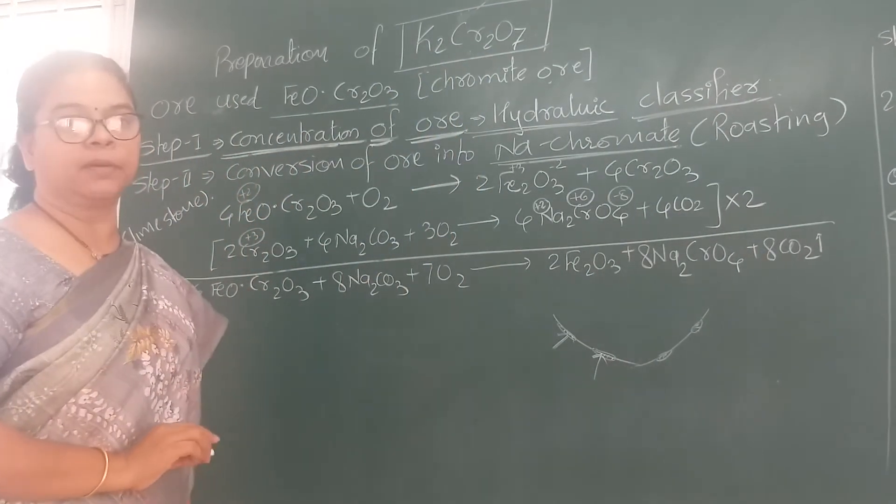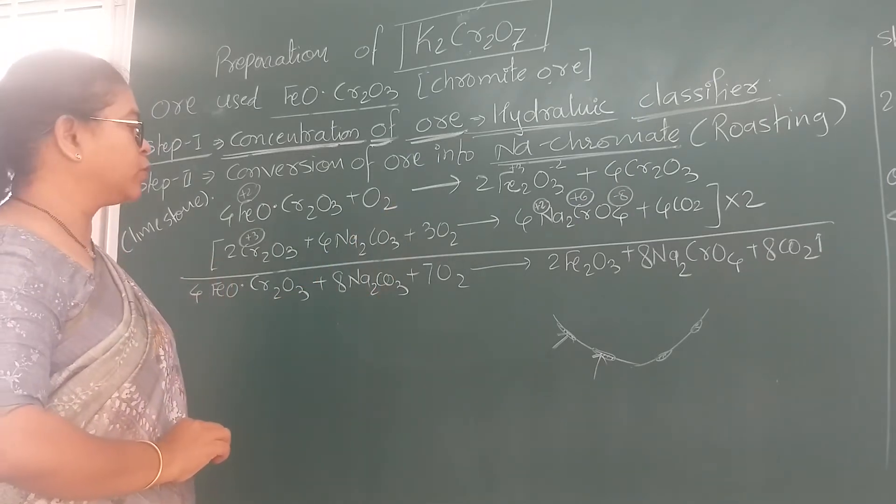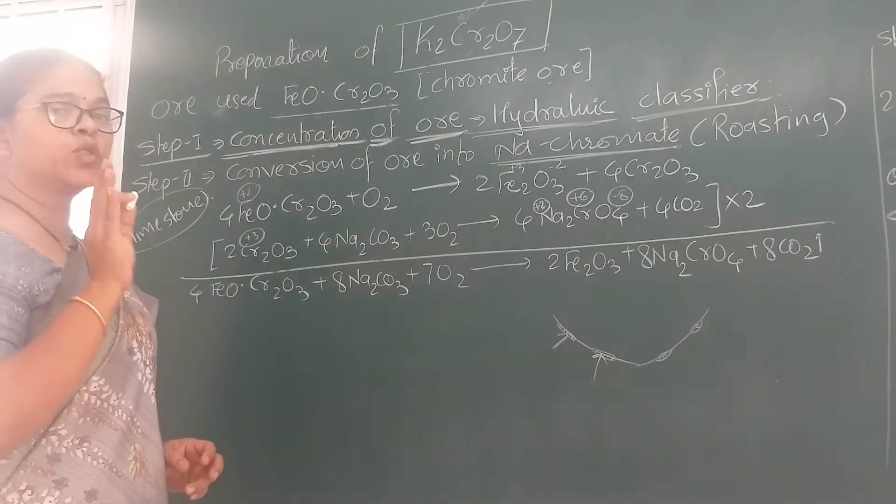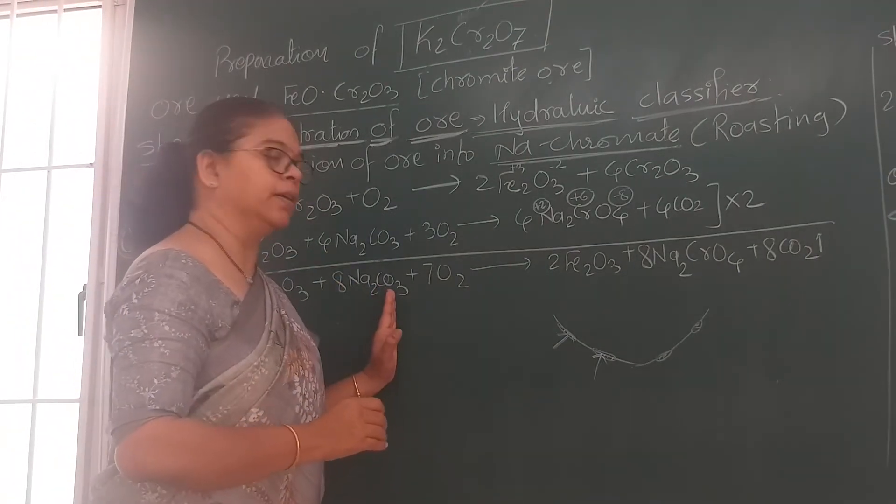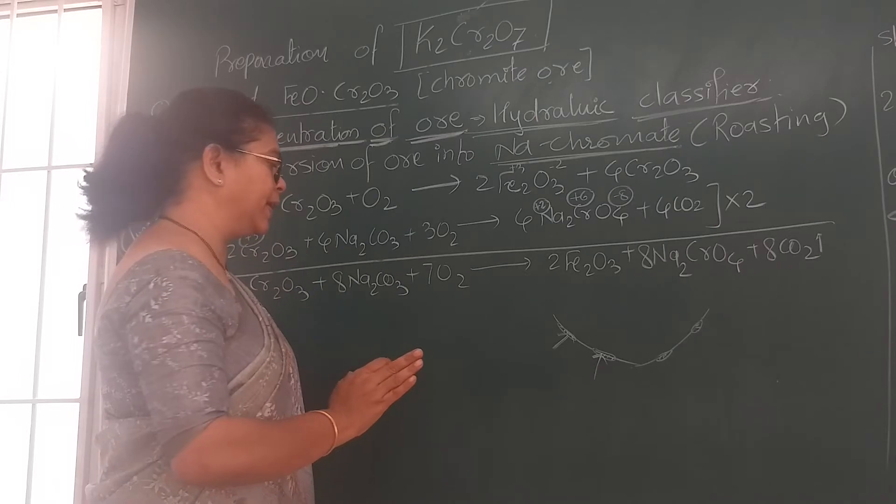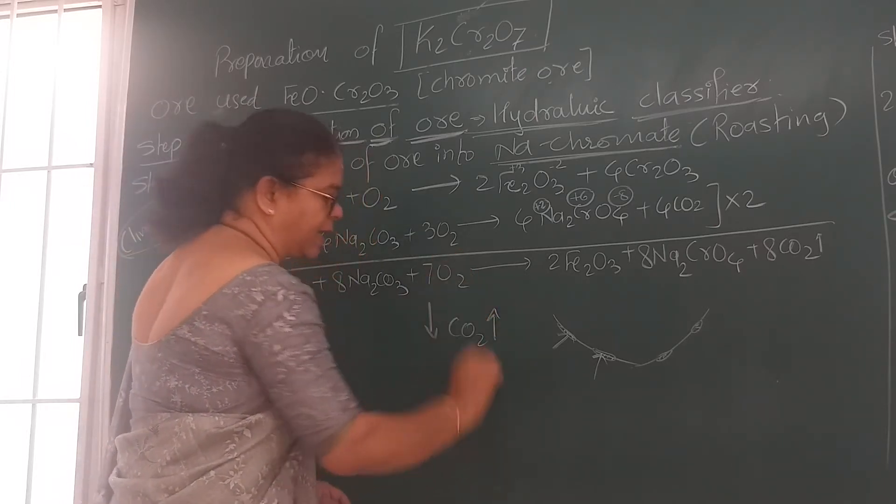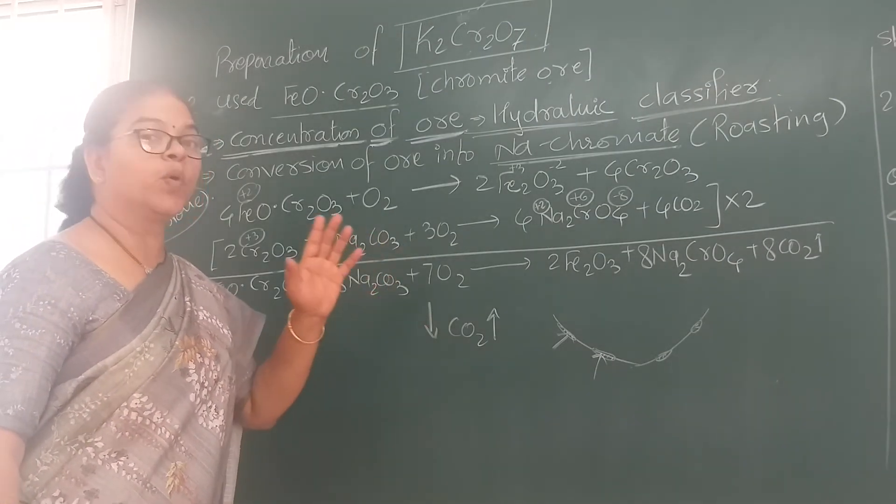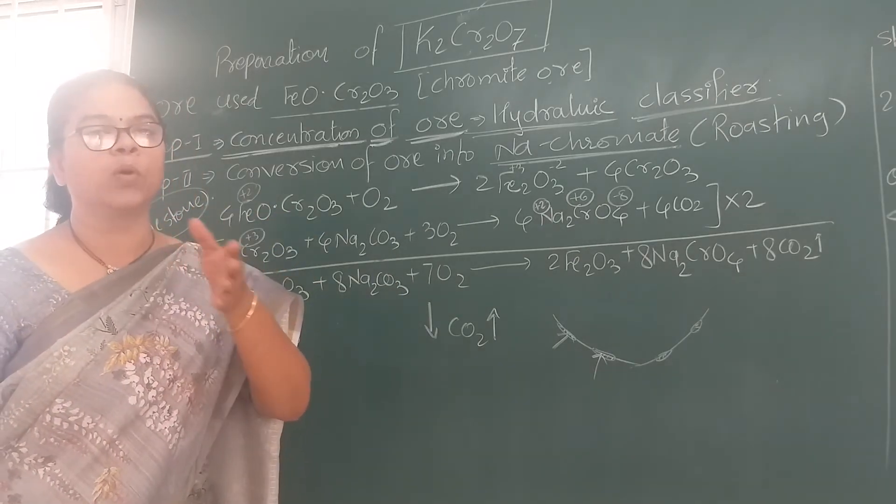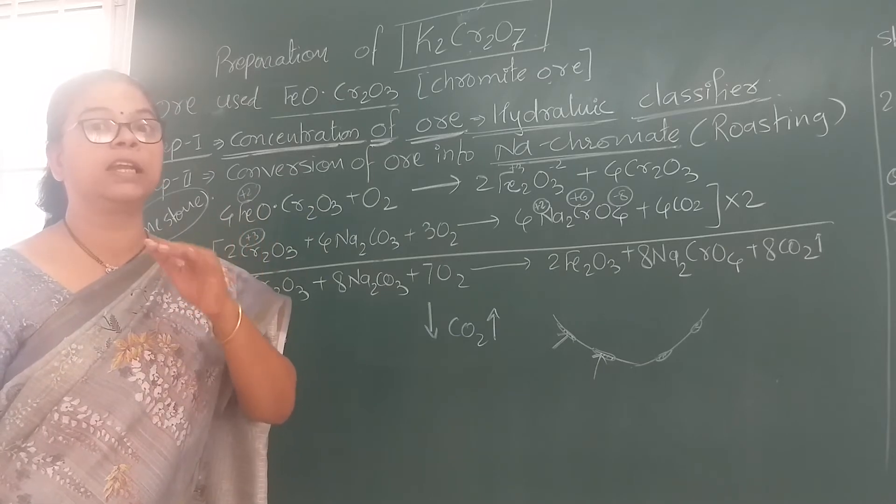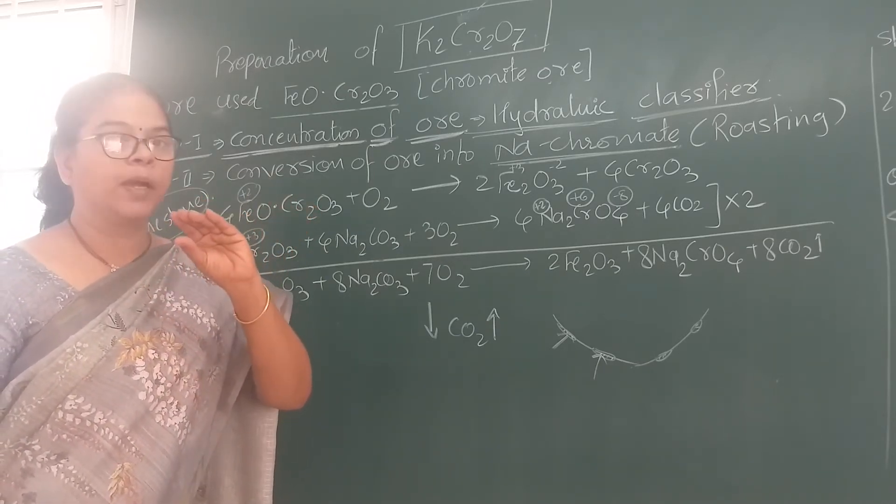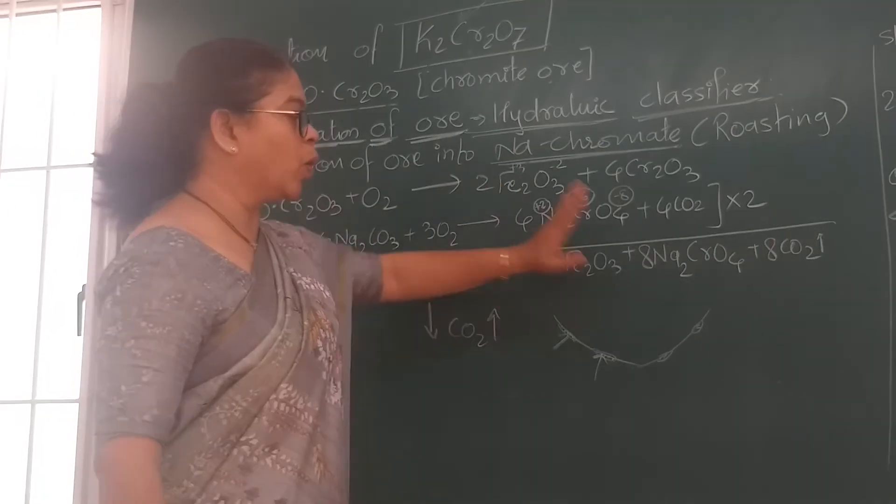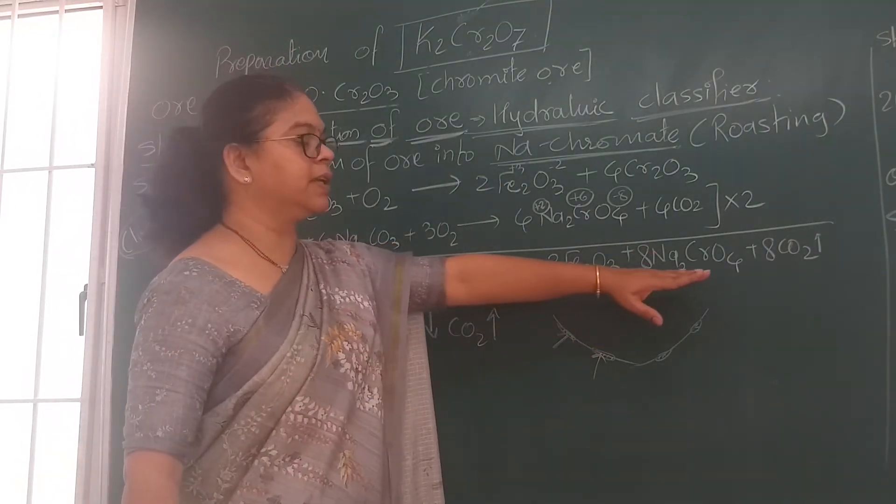Our aim is to achieve chromium in plus 6 oxidation state by oxidation process. The limestone and sodium carbonate release carbon dioxide, which makes the ore porous in nature. The carbon dioxide release gives it a spongy nature. Here, our ore becomes porous and is ready for further conversion.